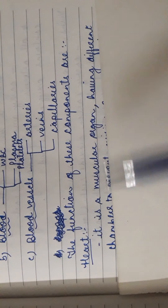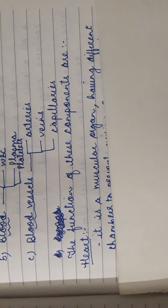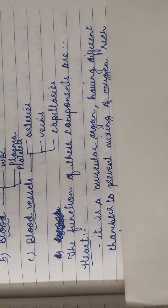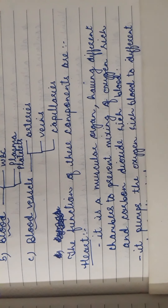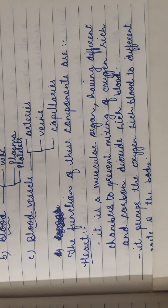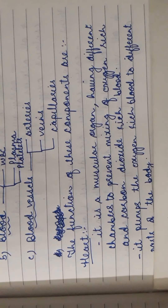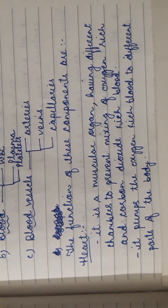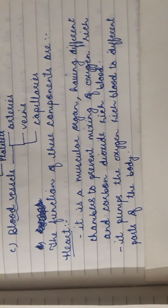Now we will mention the function of these components. Starting with the heart: the heart is a muscular organ having different chambers to prevent mixing of oxygen-rich and carbon dioxide-rich blood. It pumps oxygen-rich blood to different parts of the body.